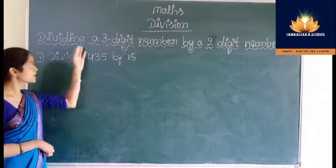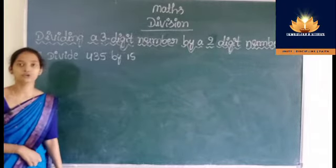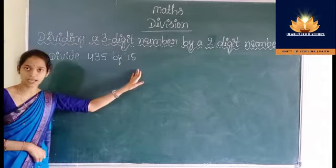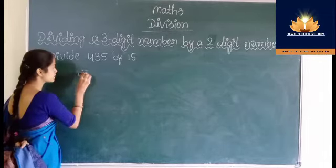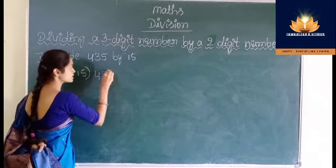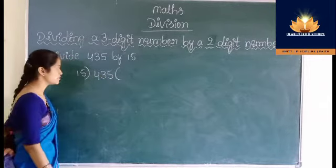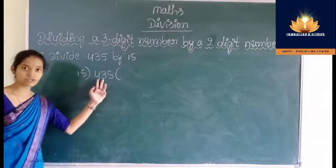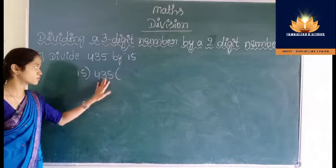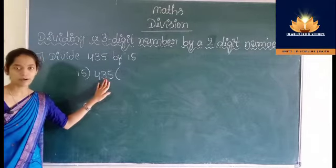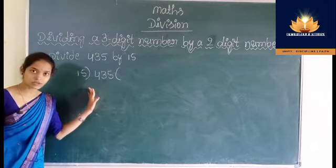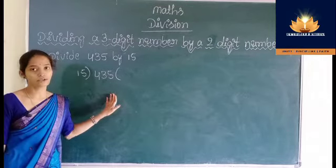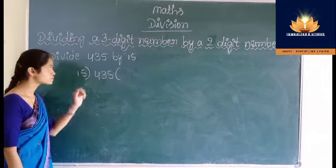Now let us learn dividing a 3-digit number by a 2-digit number. Divide 435 by 15. Here 15 is the divisor and 435 is the dividend. Since the divisor is a 2-digit number, we have to consider the 2 leftmost digits of the dividend, that is 43. Table of 15: 15 ones are 15, 15 twos are 30, 15 threes are 45. 45 is greater than 43.